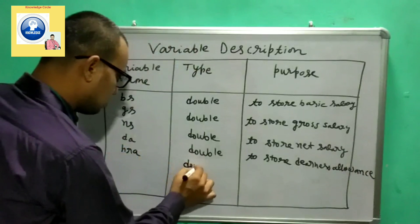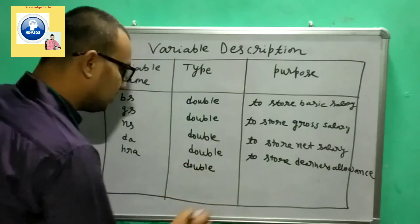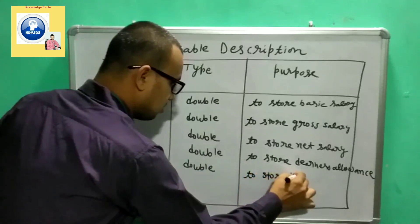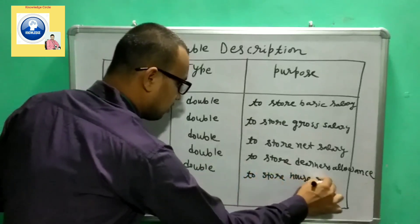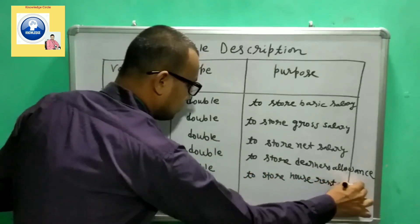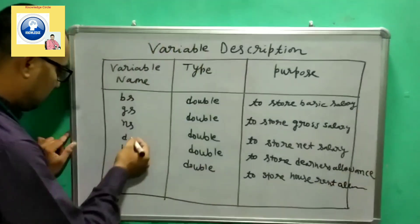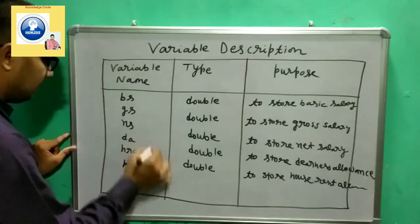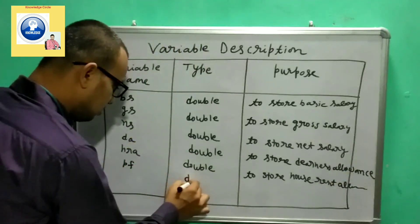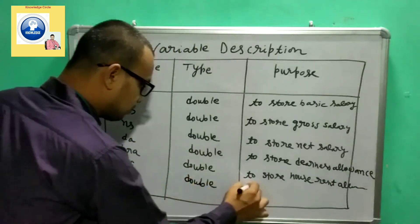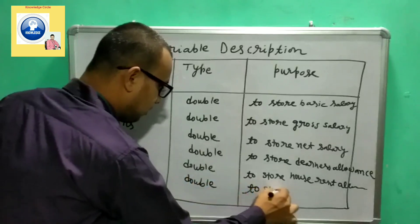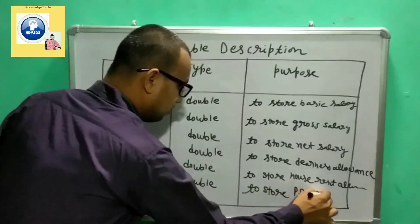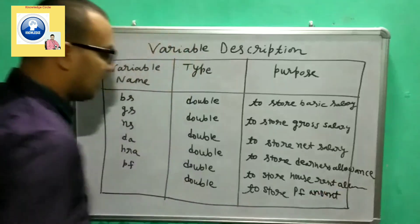The next variable is 'hra' for house rent allowance, also of type double to store house rent allowance. And then we have 'pf' for provident fund, also double, to store the PF amount. So these are the variables we will declare to store different kinds of values.